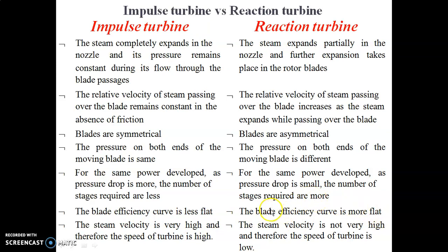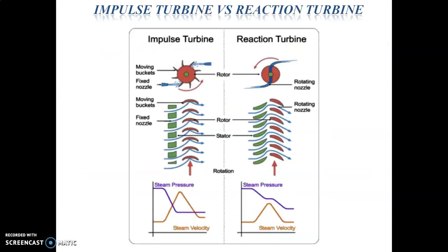In an impulse turbine, the steam velocity is very high and therefore the speed of the turbine is high. In a reaction turbine, the steam velocity is not very high, and therefore the speed of the turbine is lower.